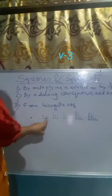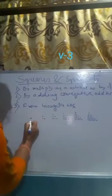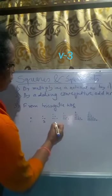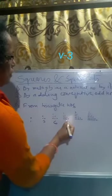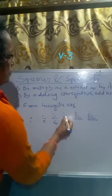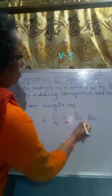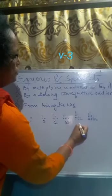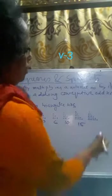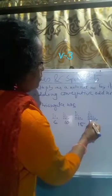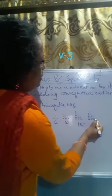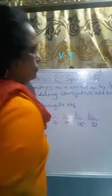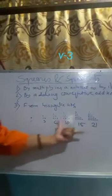If you count the number of balls in each triangular arrangement: the first has 1 ball, the second has 3 balls, the third has 6 balls, the fourth has 10 balls, the fifth has 15 balls, and the sixth has 21 balls. These are the triangular numbers: 1, 3, 6, 10, 15, 21, and so on.